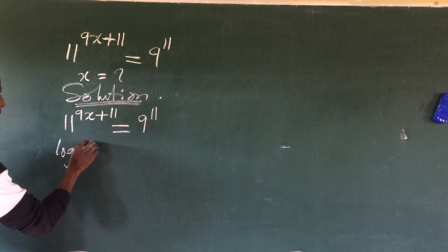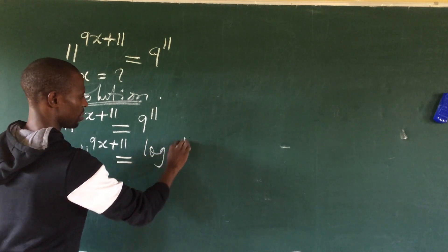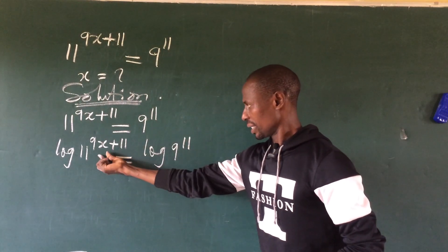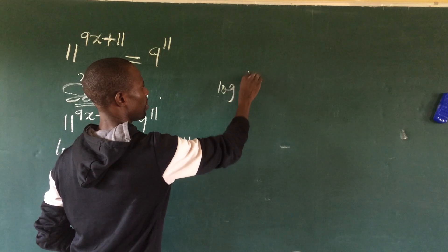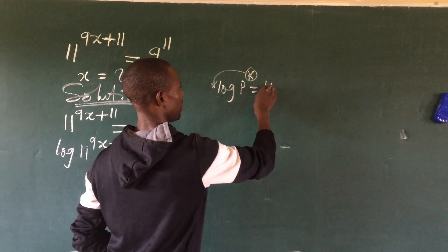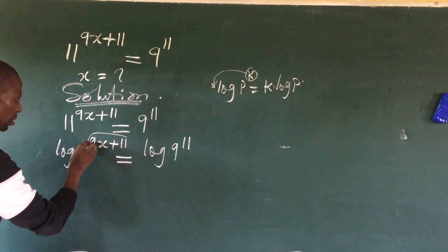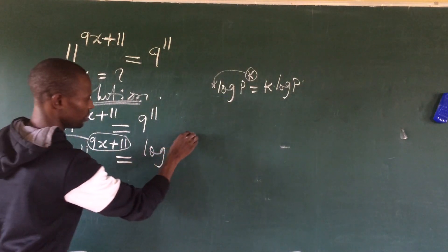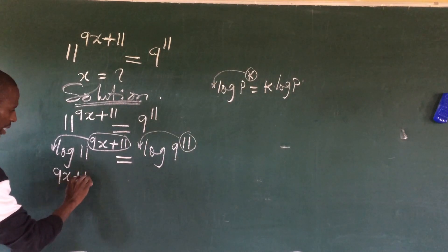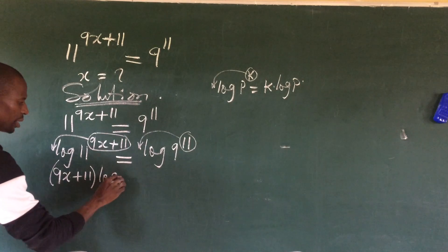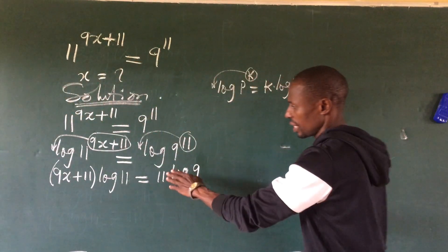This will give us: log of 11 to the power of (9x + 11) equal to log of 9 to the power of 11. According to the law of logarithm, if you have log p to the power of k, you move this exponent back to get k times log p. Applying this law, we move the exponents forward to get: (9x + 11) log 11 = 11 log 9.